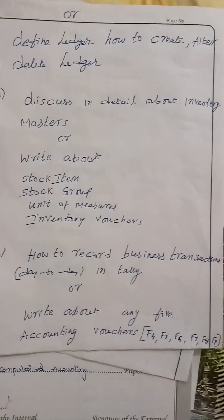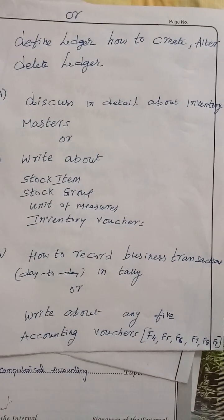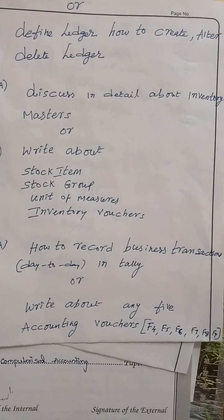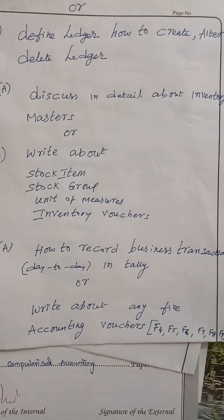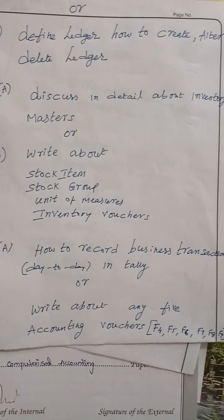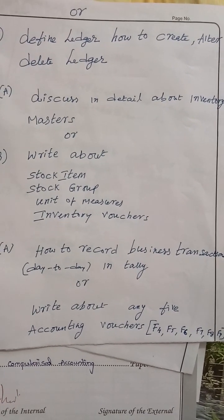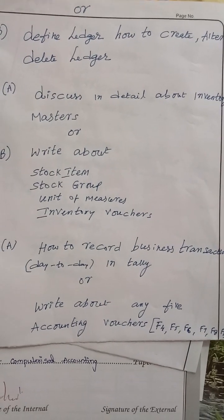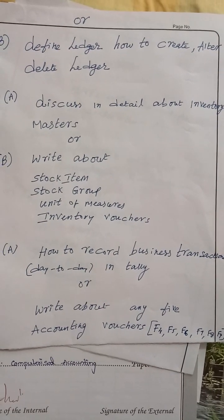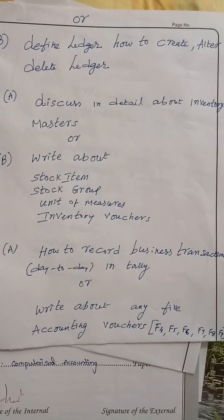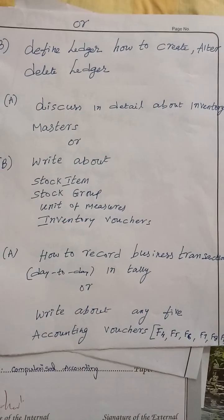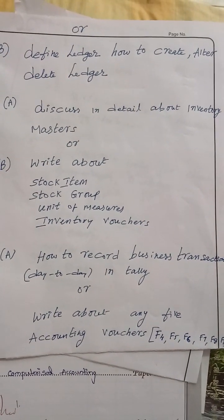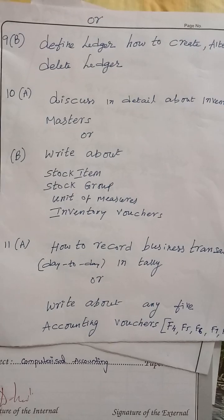This time we are expecting a question on ledger. If it is given in advanced mode, after you create the ledger by pressing F11 to enable company features and F12 for configuration, that is said to be advanced features — means maintaining bill-by details, integrating accounting with inventory, and likewise.